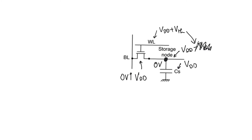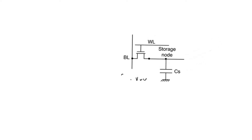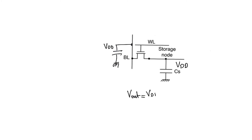It's not actually writing that is interesting or challenging — it's reading that we have to spend time to understand. Reading in one-transistor DRAMs uses a dynamic read operation, like all other memories, meaning that we pre-charge the bit line and then enable the word line. We pre-charge the bit line capacitance — first assume we are pre-charging it to VDD. Now we enable the word line. If the storage capacitor is storing VDD, then we read a V_out of VDD on the bit line.